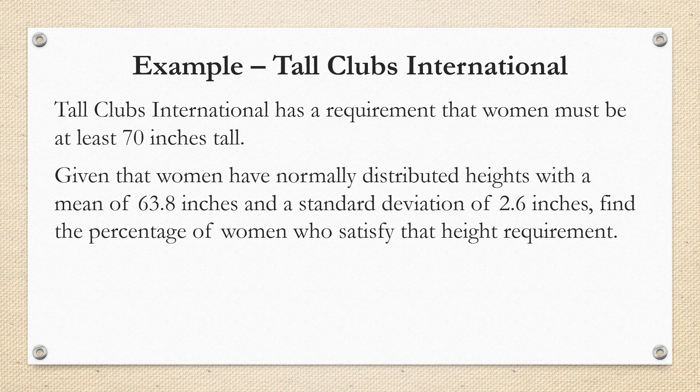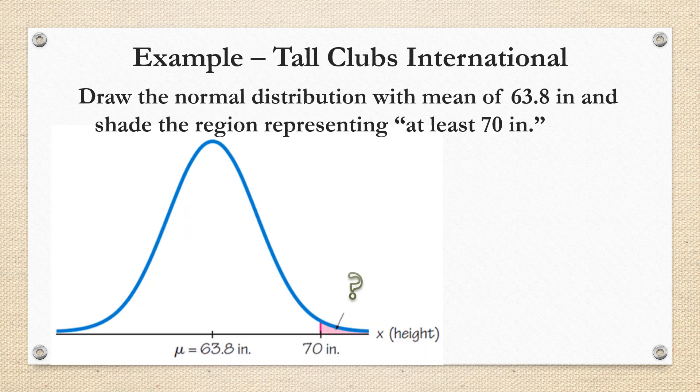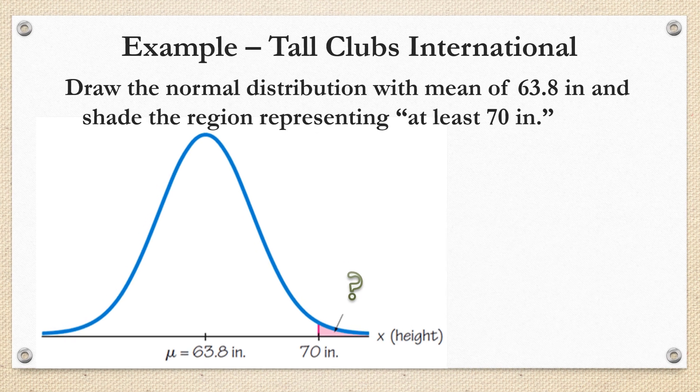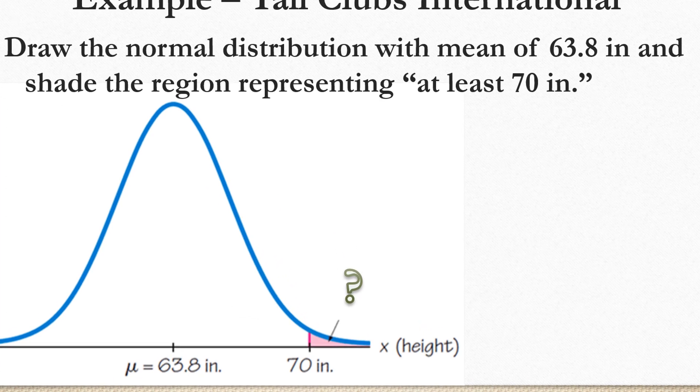So the first thing you always want to do when you're solving a problem like this is to draw a picture. If you skip that step, it may be confusing which area you're talking about and you can make errors. So I'm going to draw the normal distribution with a mean of 63.8 and shade the region representing those data values that are above 70 inches to the right of 70 inches because the problem said at least 70 inches.